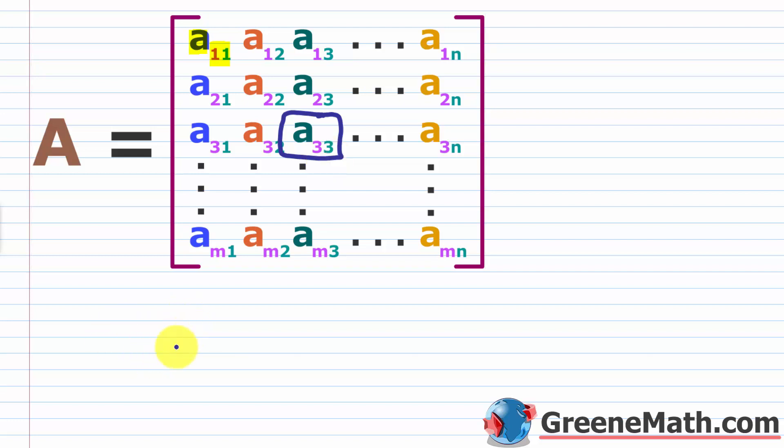Generically in your textbook, you'll see a sub i,j — all this means is the element in the i-th row and the j-th column. It's always row first and column second. One thing that can cause confusion: if you see it with a comma, like a sub 3,2, it's the same as a sub 32 written without a comma. However, if you have two-digit numbers, you need to use a comma. For example, a sub 3 and then 12 — without a comma you can't tell if it's row 31 column 2, or row 3 column 12. So use a comma to clarify — row 3, 12th column.